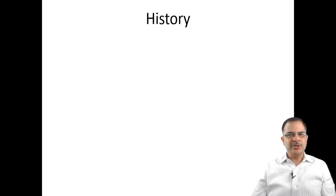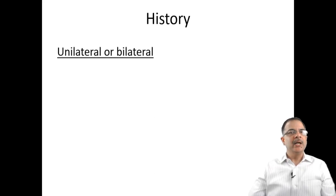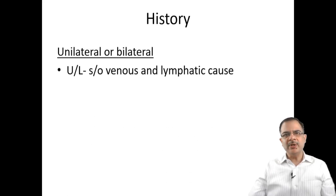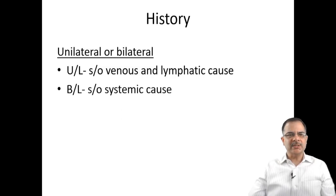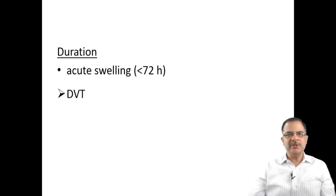When a patient comes to the OPD, we should take history systematically — history, examination, and lab tests — to determine the etiology of swelling. First, ask whether it is unilateral or bilateral. Unilateral swellings are due to venous or lymphatic causes like varicose veins, venous insufficiency, or DVT. Bilateral swelling is mainly due to systemic causes like liver, heart, or renal failure.